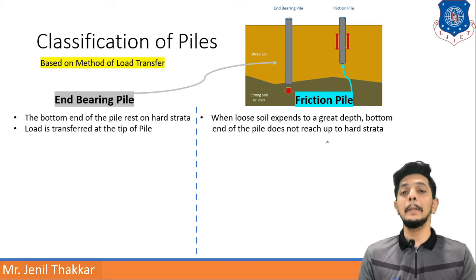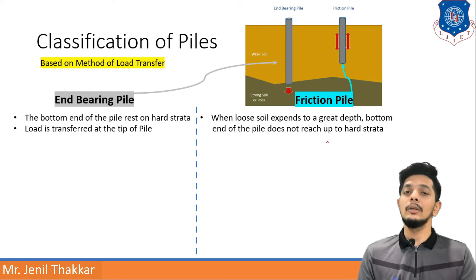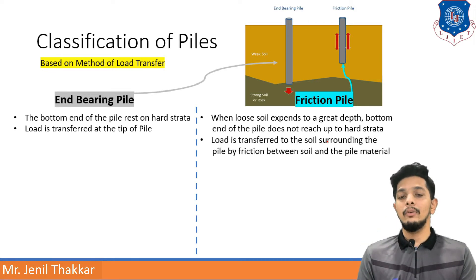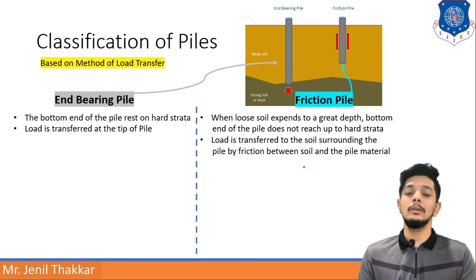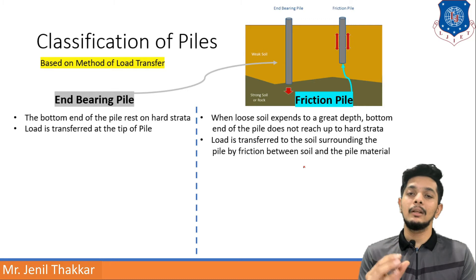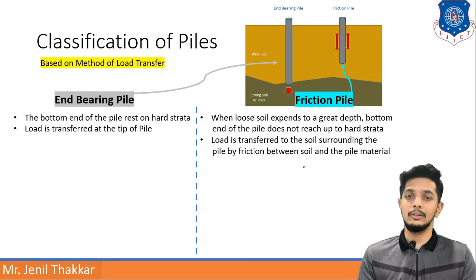Load is transferred at the tip of the pile in case of end bearing pile — the name suggests that bearing is done by the end or tip. In the case of a friction pile, load is transferred to the soil surrounding the pile by friction between the soil and the pile material.